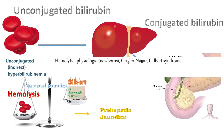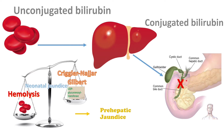After bilirubin goes through the liver and becomes conjugated, it comes out through the biliary tract to the intestine. If it gets obstructed along the way, this is post-hepatic — it's after conjugation has already occurred in the liver. The type of bilirubin elevated in this case will be conjugated. Obstruction can come from the pancreas, a stone in the gallbladder, cancer in the biliary tree, or a cholestatic liver disease.